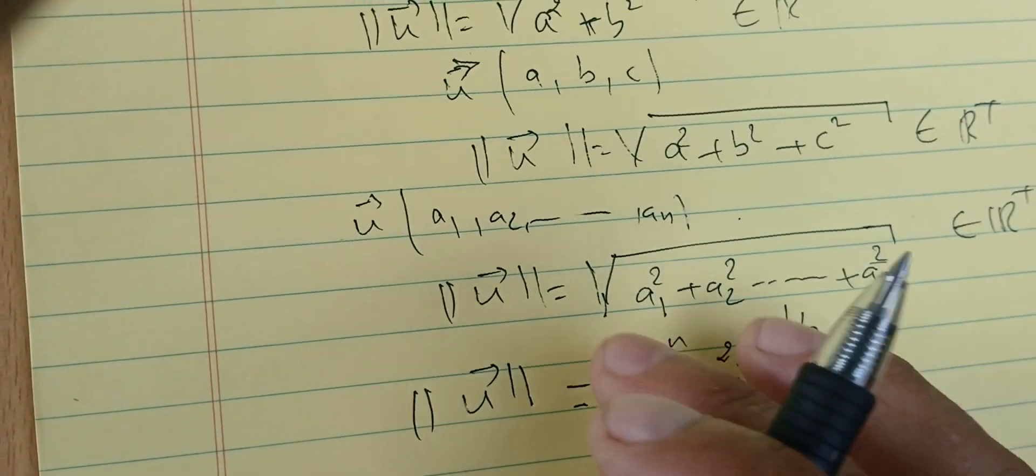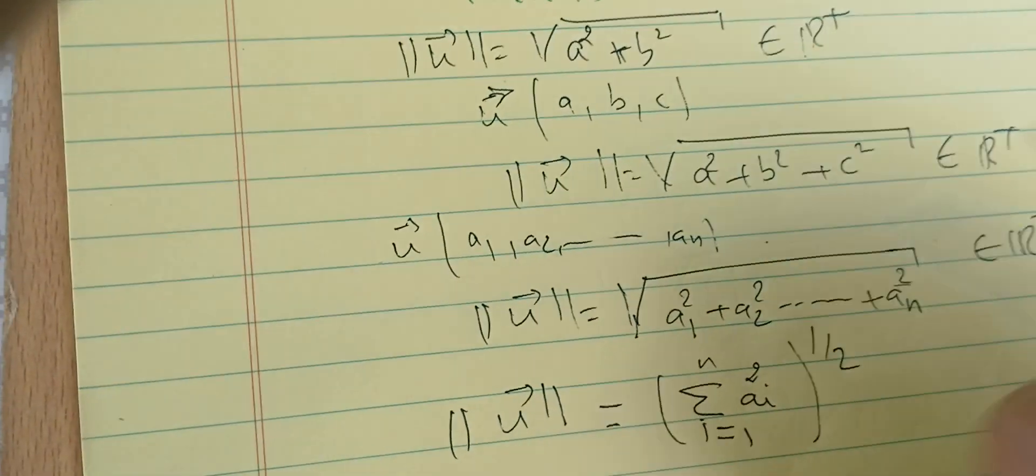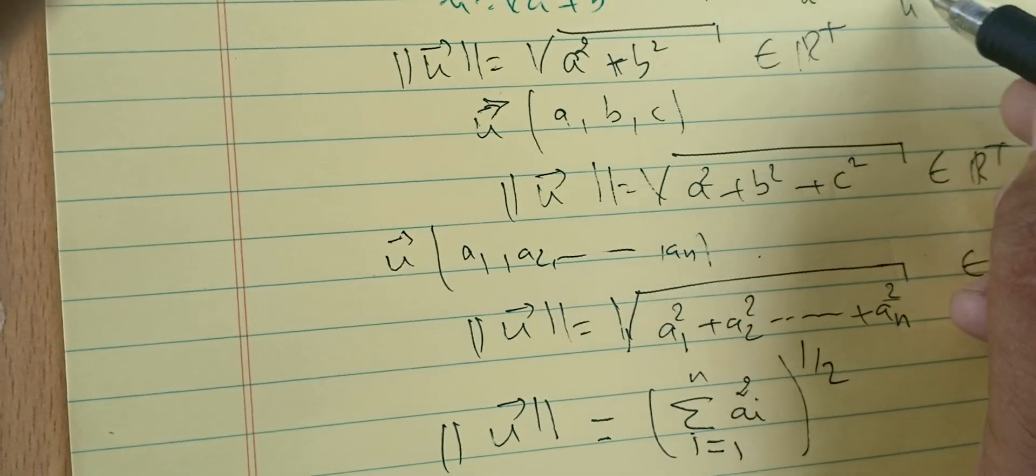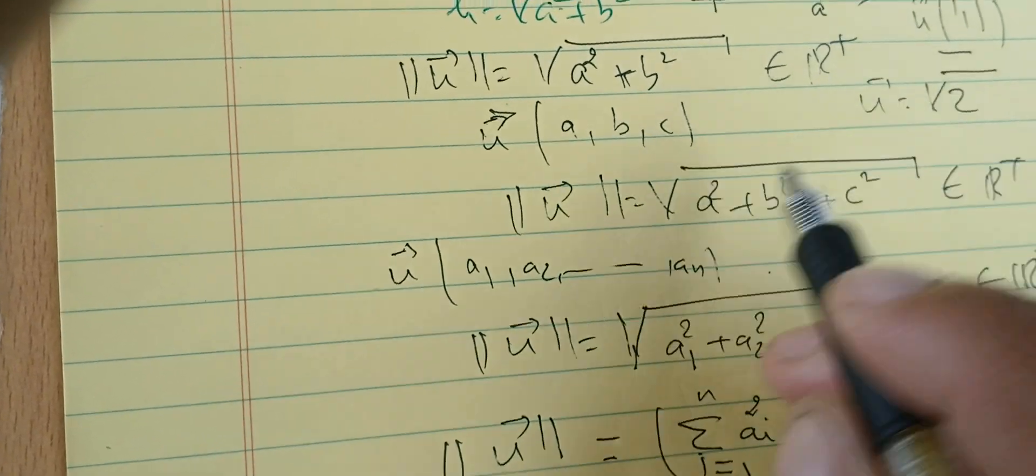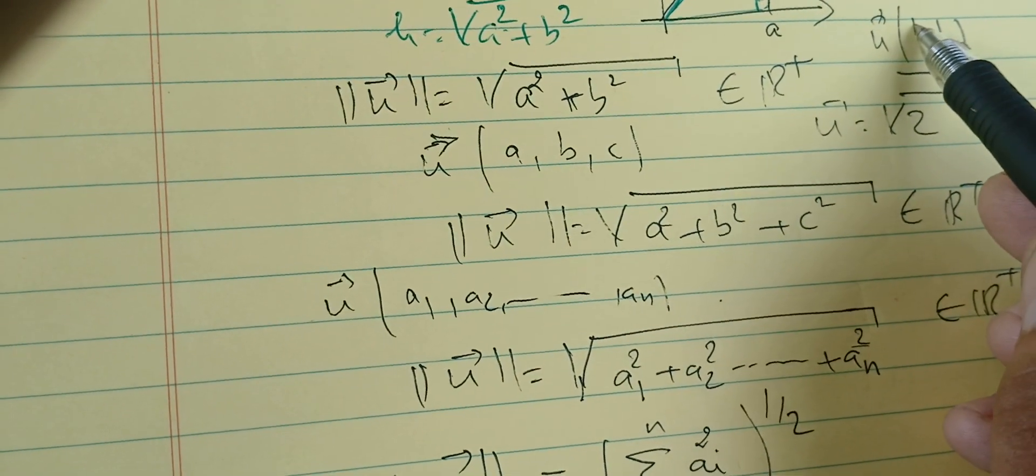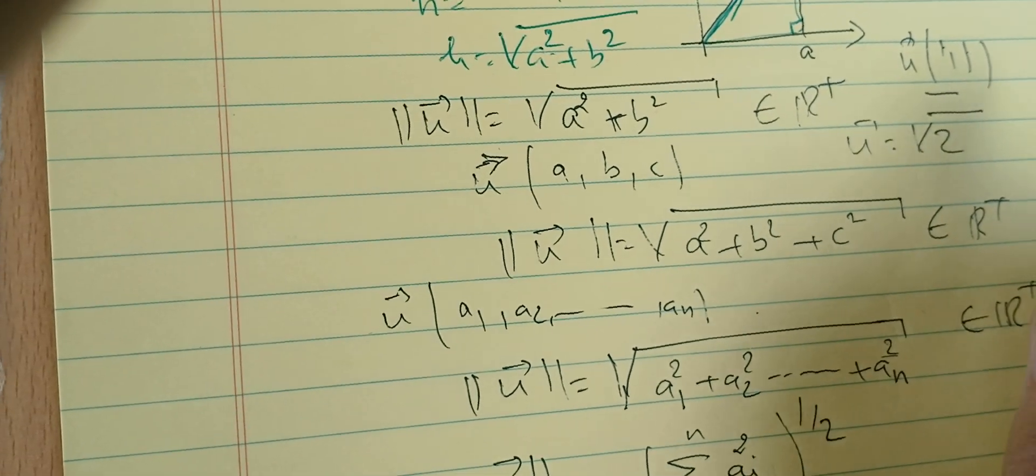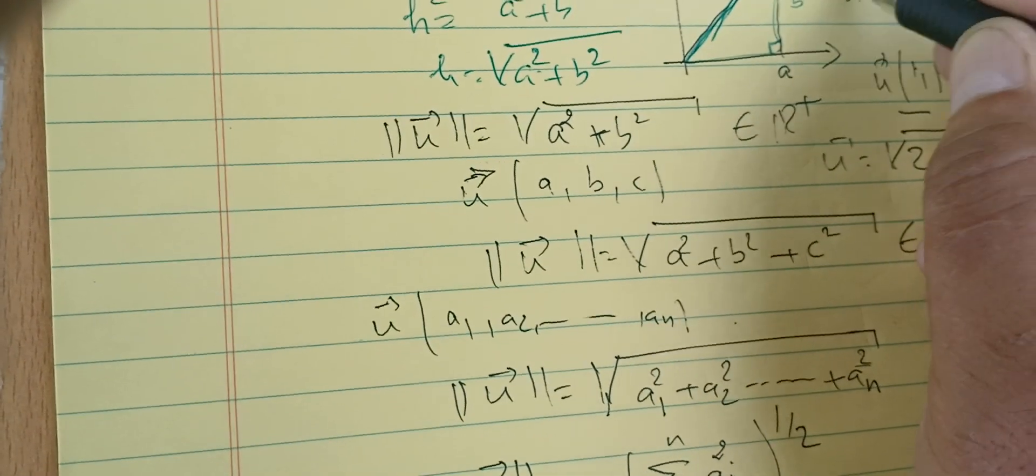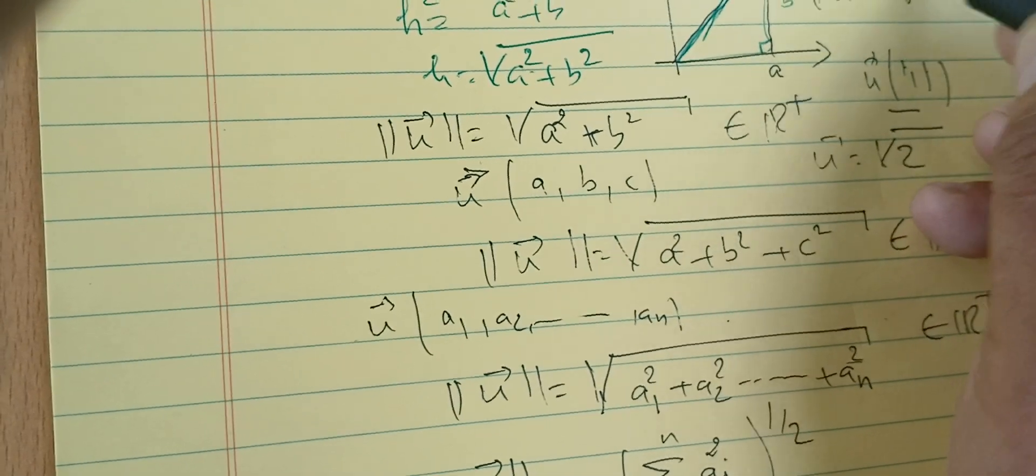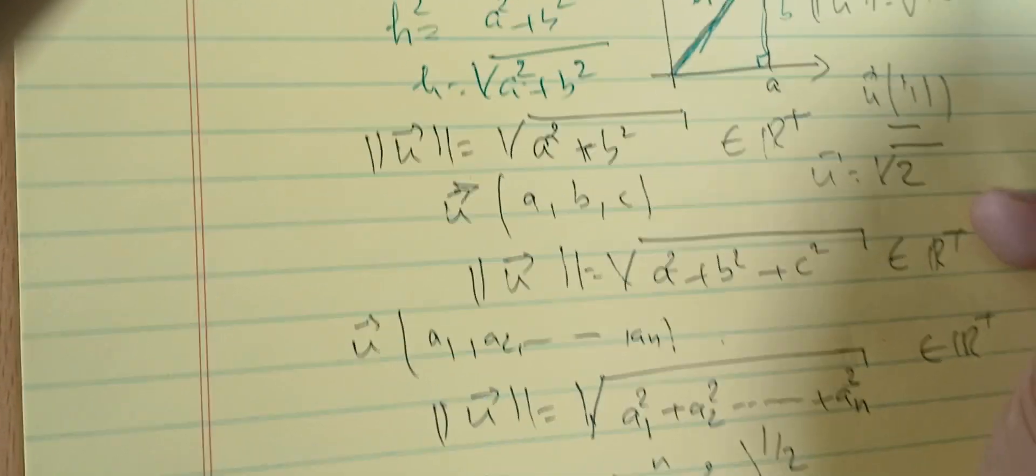This is just a quick reminder. If we have a vector with coordinates (1, 1), the norm of u is √2, because 1² + 1² = 2. If I have a vector with coordinates (-1, 3), the norm of u is √(1² + 3²) = √(1 + 9) = √10.